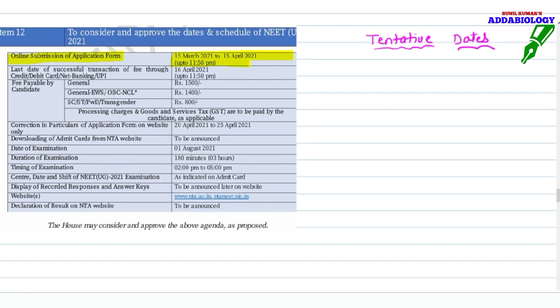The online form application will be released from 15th March 2021. These are tentative dates, not exact dates released by NTA, and it will end on 15th April 2021. You are getting only one month to upload your form online. The last date for successful transaction via credit card, debit card or UPI banking will be 16th April 2021.